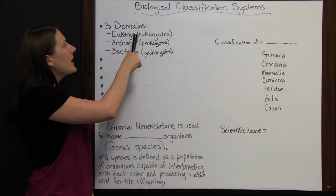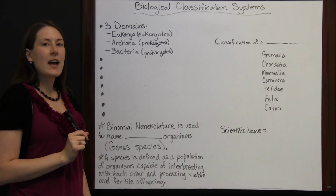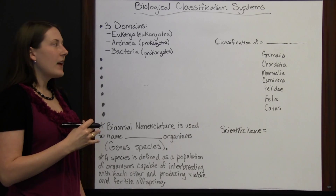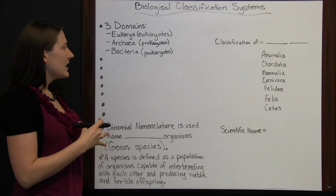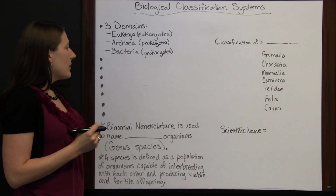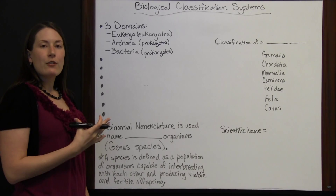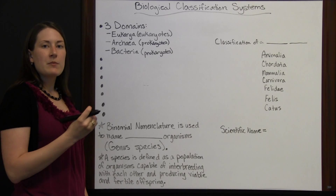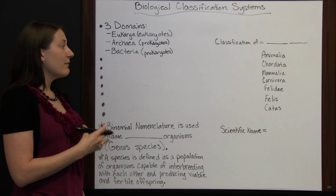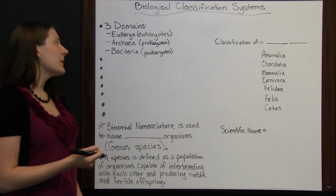Beneath domains, there are other rankings that organisms are divided into so that we can keep all the organisms organized and see how they're grouped together, and see which organisms are related to other organisms, and from that determine which characteristics they may have in common.